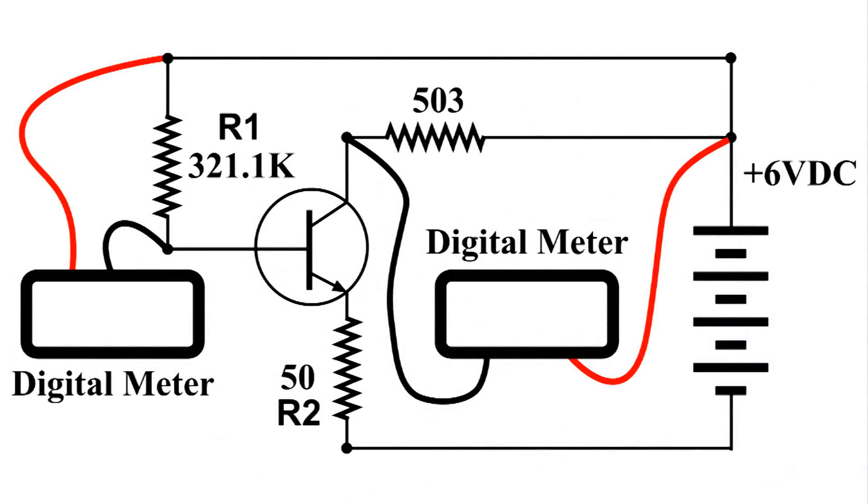This is the wiring diagram of the picture that you saw. Rather than put a current meter in the circuit, I'm going to use Ohm's law to figure out what the current is that is going through that 503 ohm resistor and also the current going through R1.